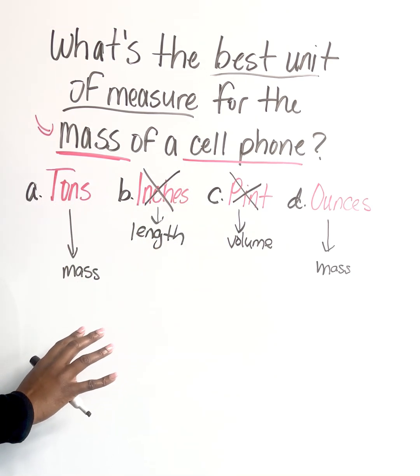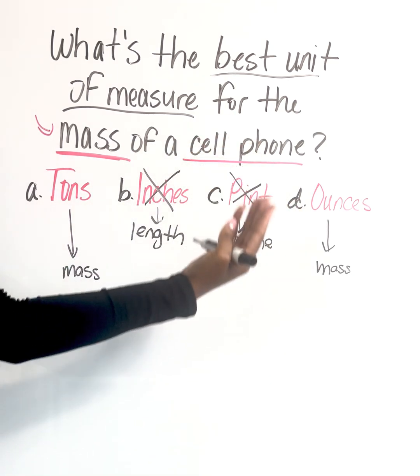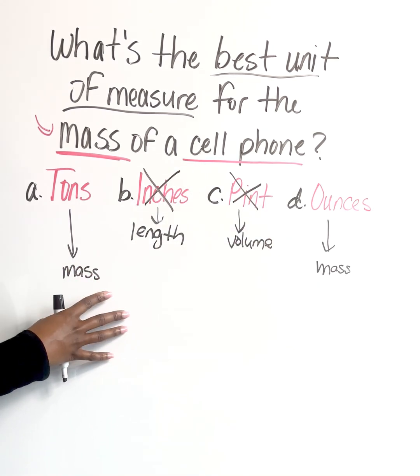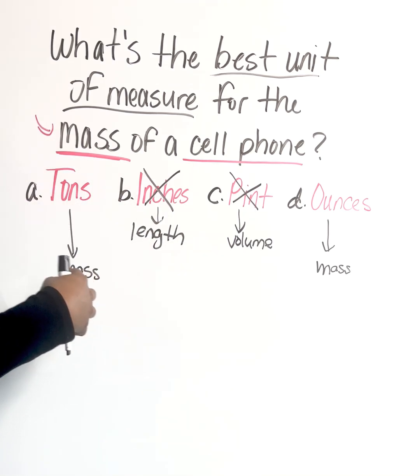We know common sense-wise, if tons measures mass and ounces measures mass, we're looking for the mass of the cell phone. So either one of those could work. But what's the most appropriate? When we think of tons, we need to think of larger objects, things that weigh a lot.